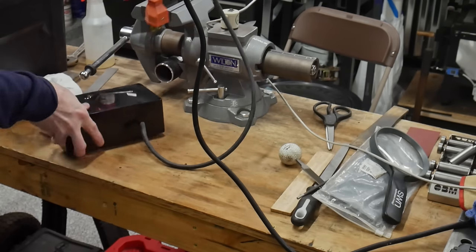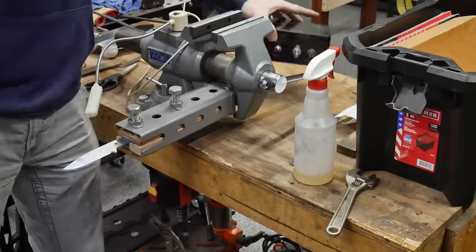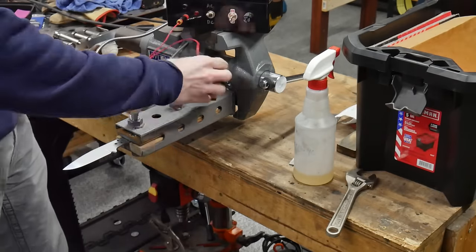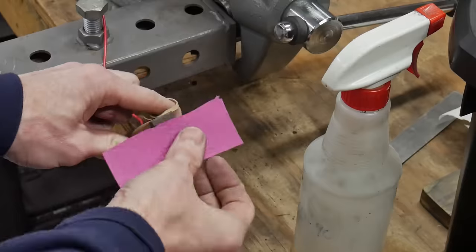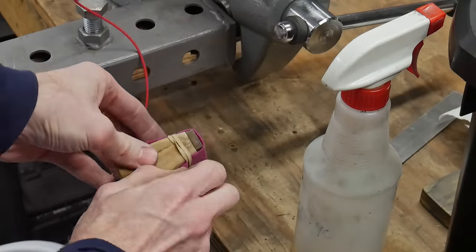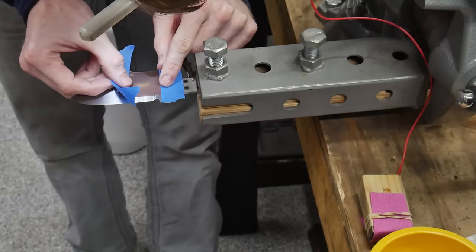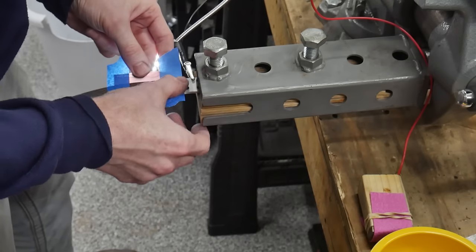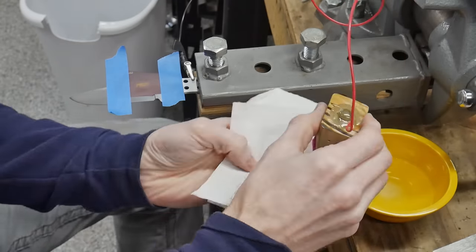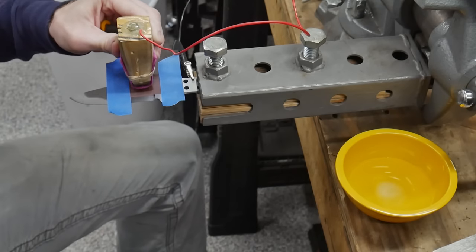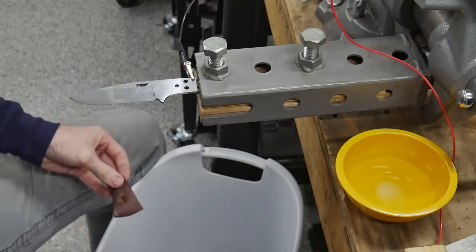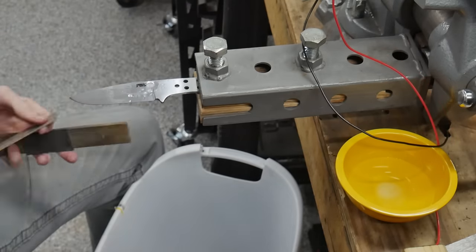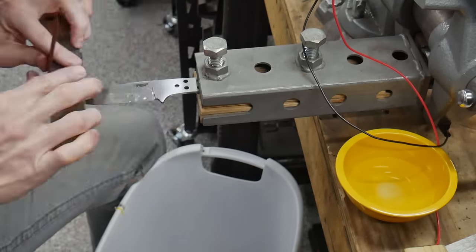After the blade has all been sanded up to a 320 grit finish, it's time to etch on my maker's mark. I get my etching stencils from TUS Industries and I etched them on with a DIY electrochemical etching machine. To get a deep etch I use my etcher on DC power, and then to darken the etch I use AC power. One of the hardest parts here is getting your stencil lined up, so make sure to take your time. Once I'm done etching, I'll spray down the stencil with Windex and store it in soapy water to maximize its life.